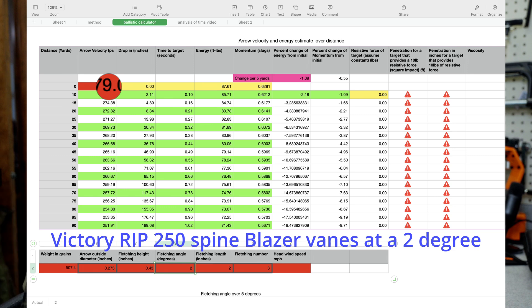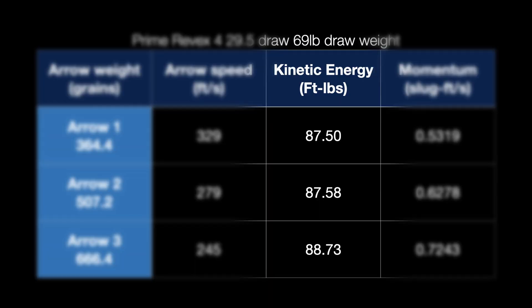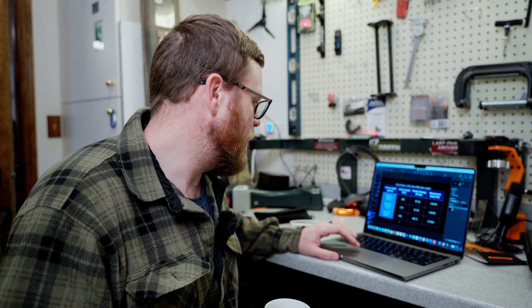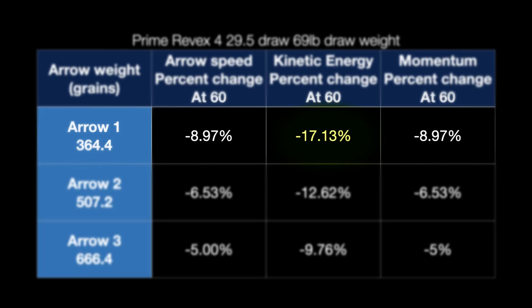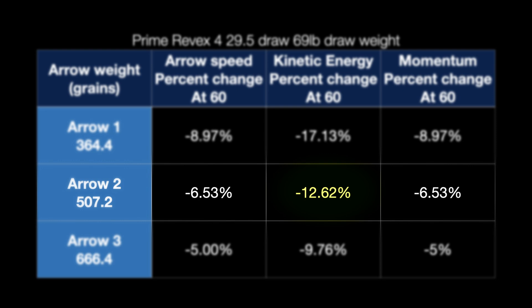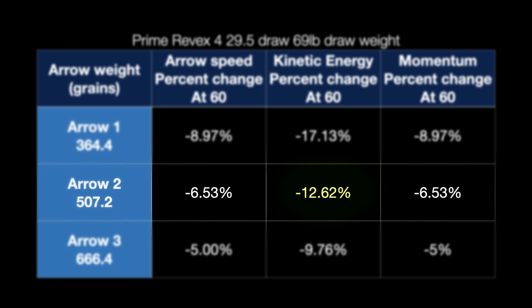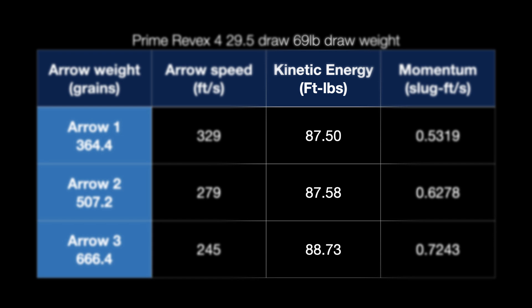What we find out from this ballistics calculator is how much energy will we lose at distance — let's say 60 yards, for example. We remember from the last video that the energy starting out was roughly constant for every arrow. The light arrow loses about 17% of its energy from launch to 60 yards. The 500-ish grain arrow lost just over 12.5% — that's 5% less — so you have 5% more energy at 60 yards compared to the light arrow. Remember, they all started with the same energy.